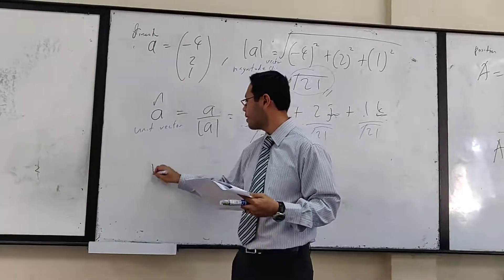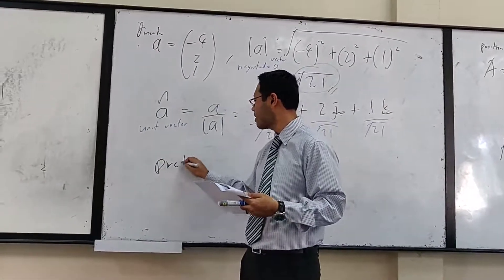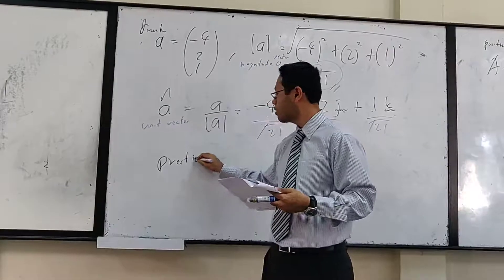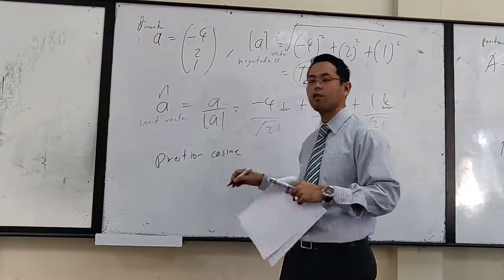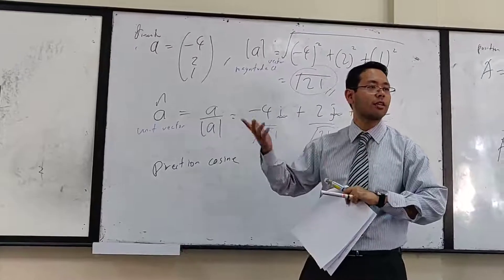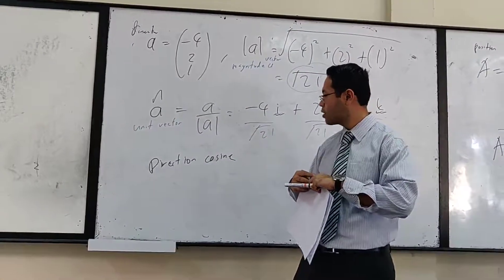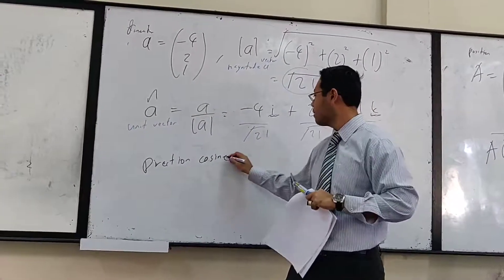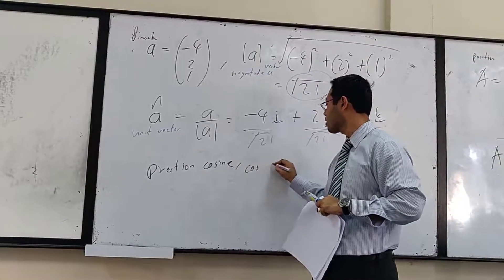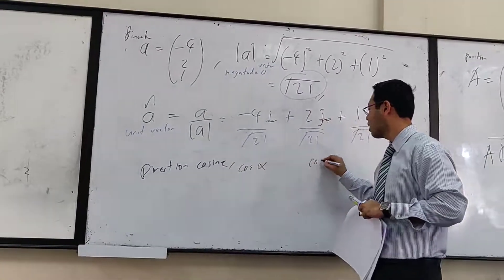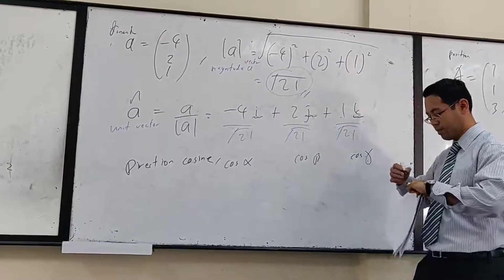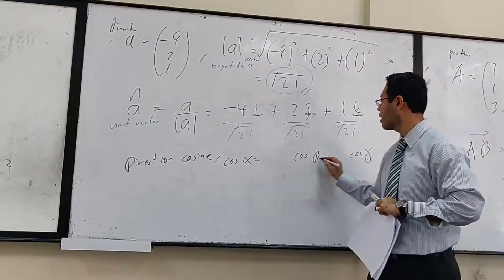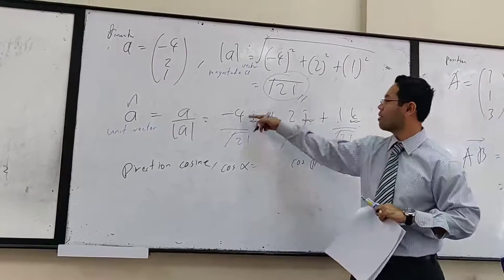Alright, other than that, I think I sort of wrongly misplaced direction cosine. Simply, cos alpha, cos theta, cos gamma. Simply, whatever you have here, bring it down.